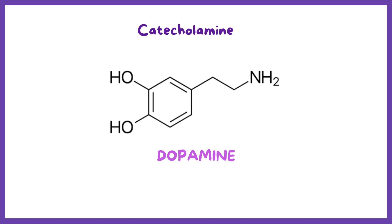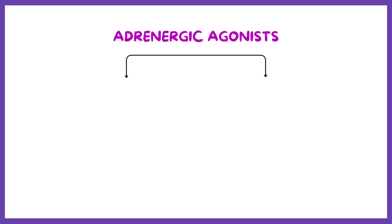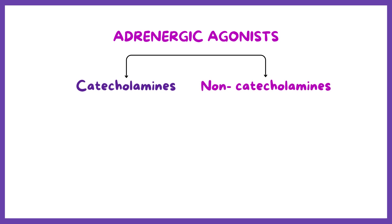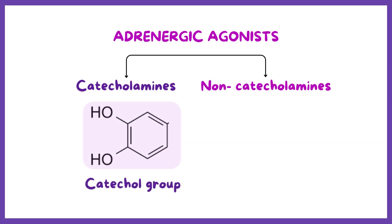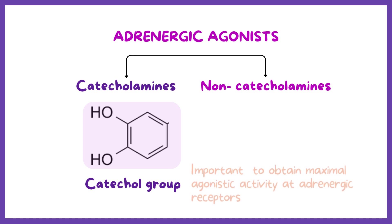As we discussed before, adrenergic agonists are classified into two categories: catecholamines and non-catecholamines, on the basis of the presence or absence of a catechol ring. The catechol ring is a benzene ring with two hydroxyl groups at its third and fourth position. The catechol moiety is an important structural feature to obtain maximal agonistic activity at adrenergic receptors.